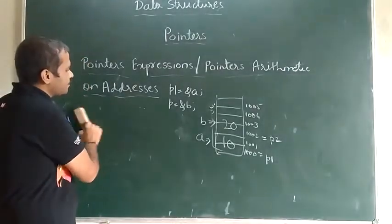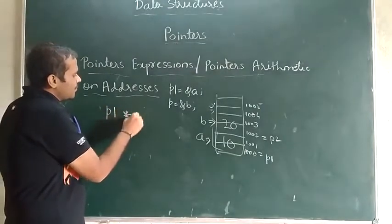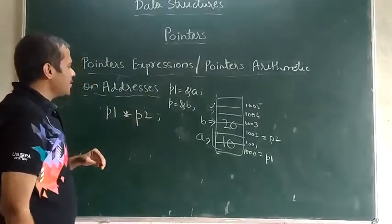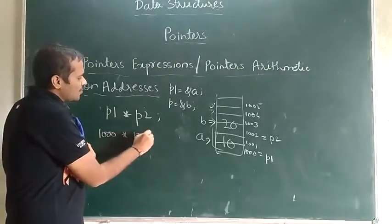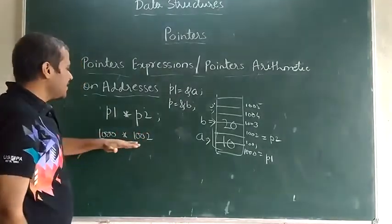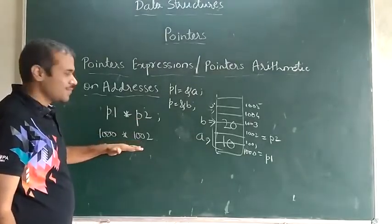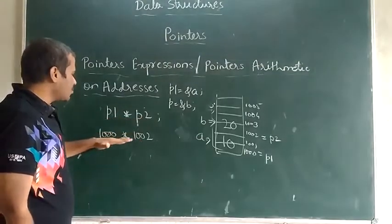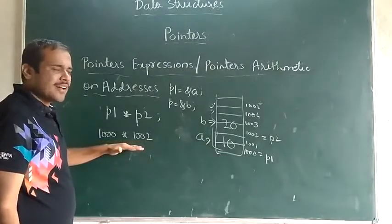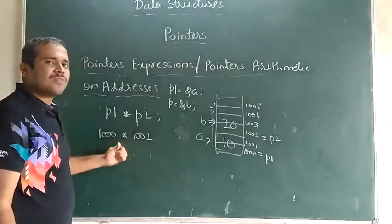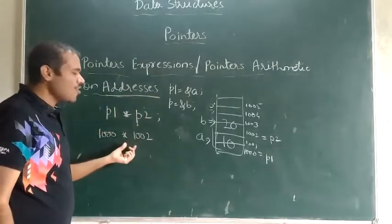Next, let us try multiplication — p1 into p2, which is 1000 multiplied by 1002. The result will be very large and that address may or may not be available in your computer. Therefore, multiplication on pointer addresses is also not possible.